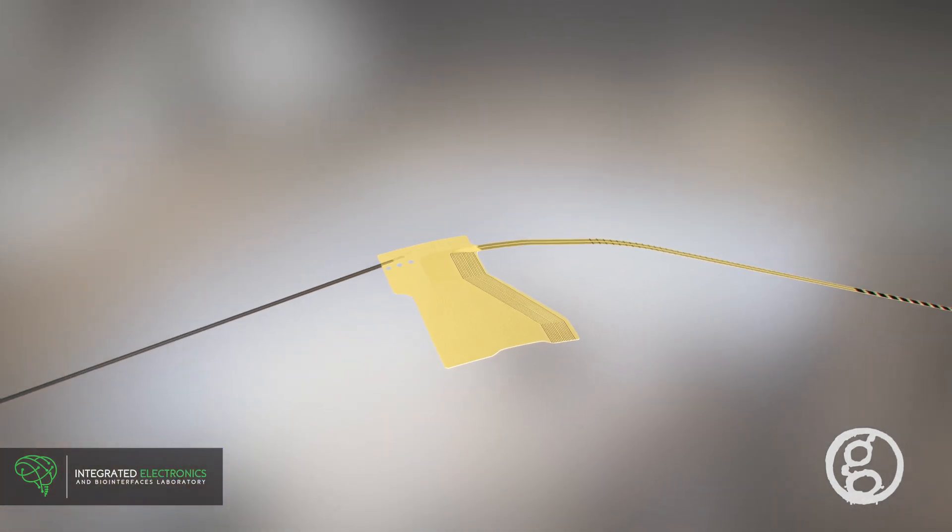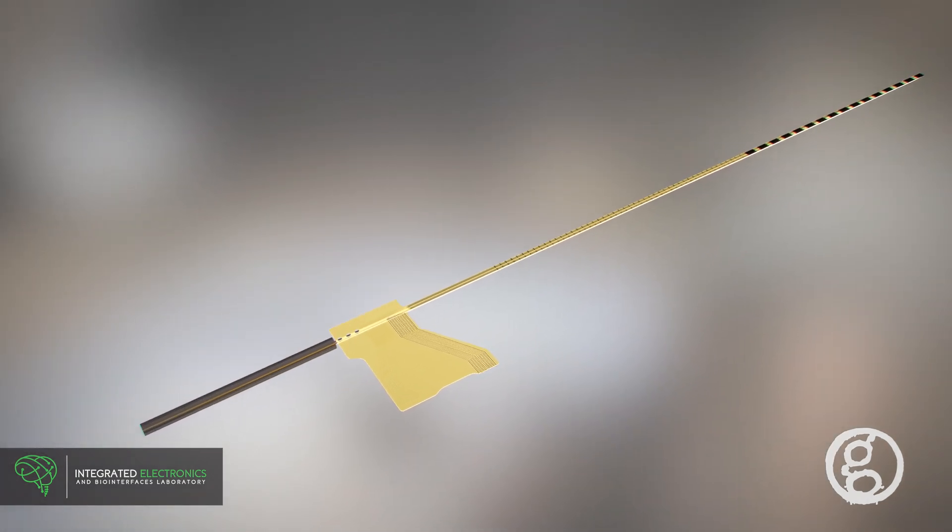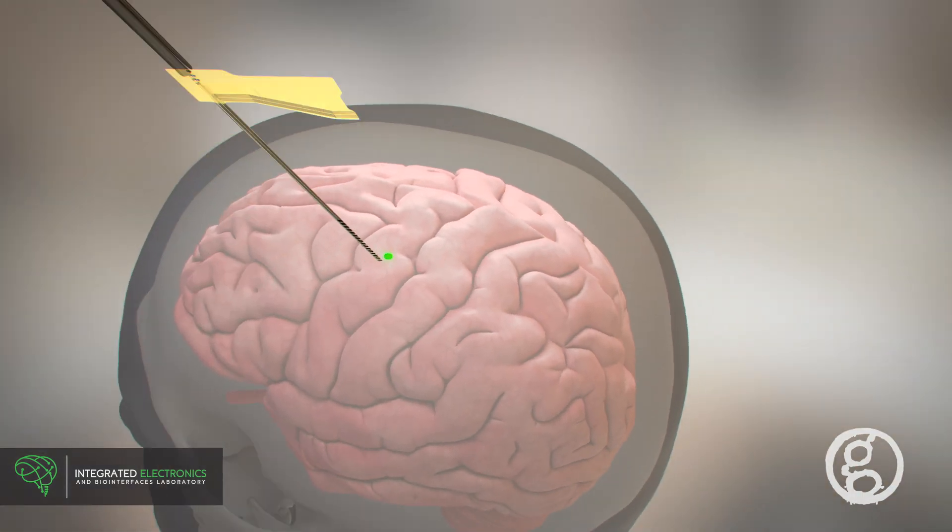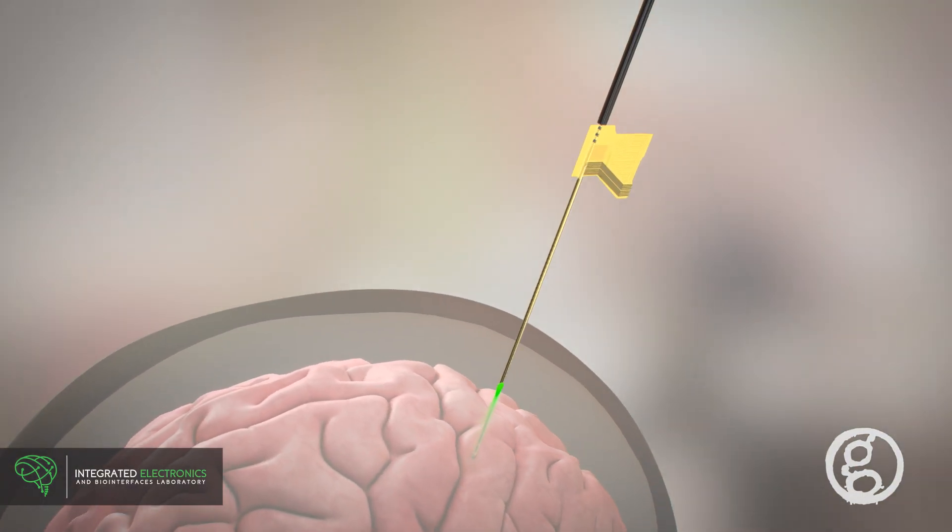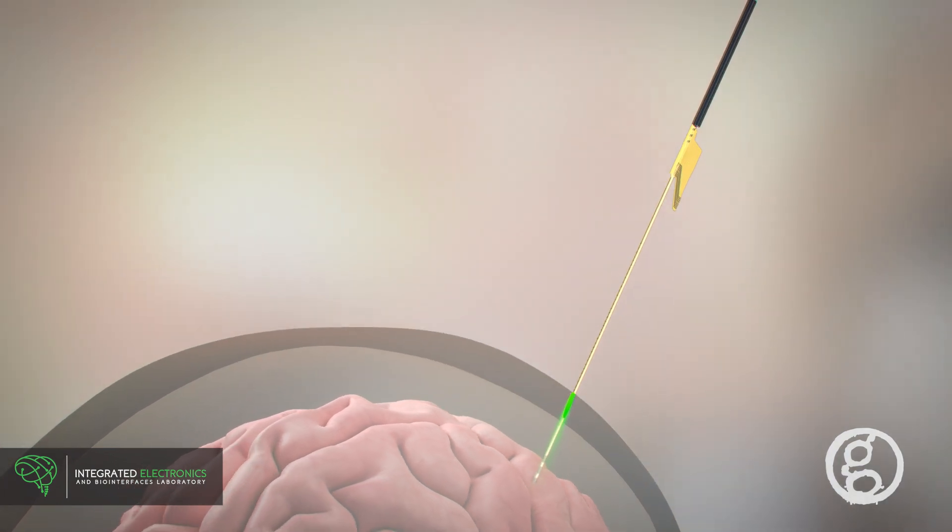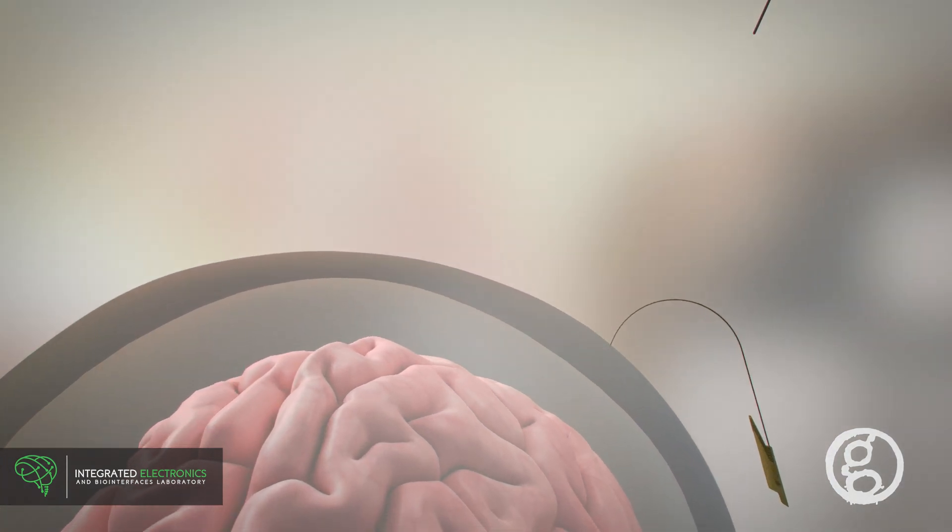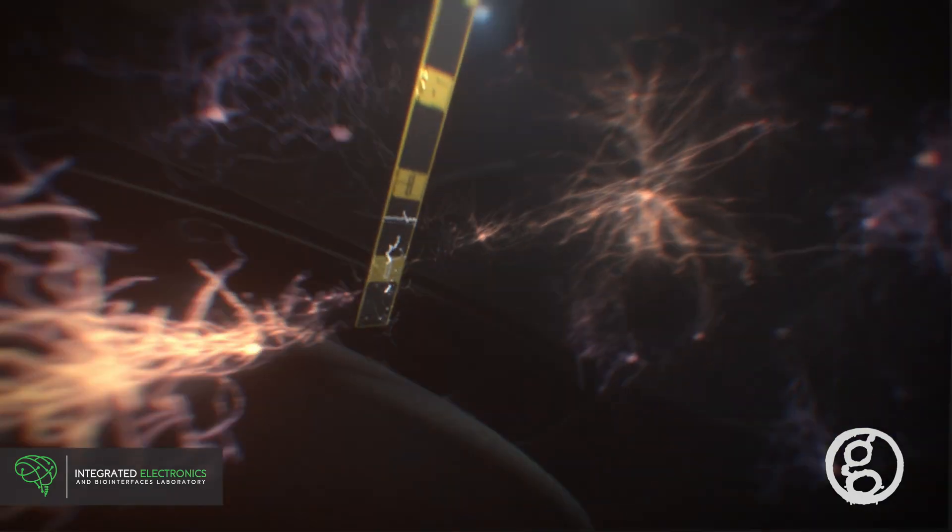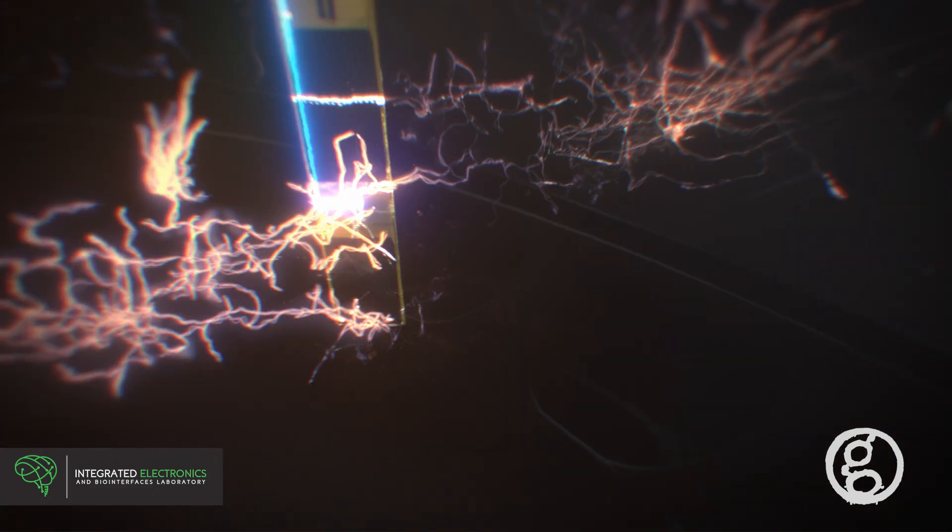To implant it, a stylet is inserted between the electrode's polyimide layers, making it temporarily rigid to be compatible with current surgical and clinical protocols. After implantation, the stylet is retracted, leaving the flexible thin film in the brain, minimizing damage.